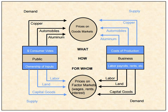Economic price theory asserts that in a free market economy the market price reflects interaction between supply and demand; the price is set so as to equate the quantity being supplied and that being demanded. In turn, these quantities are determined by the marginal utility of the asset to different buyers and to different sellers. Supply and demand, and hence price, may be influenced by other factors, such as government subsidy or manipulation through industry collusion.